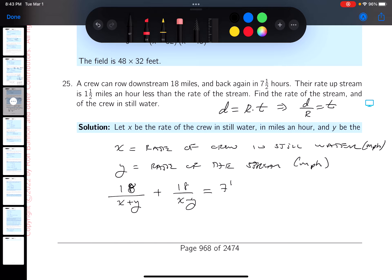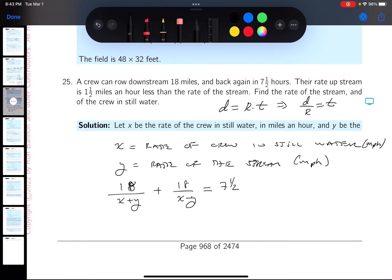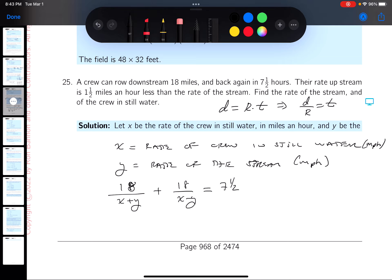By the way there's other things been said. It says a crew can row downstream 18 miles and back again in 7.5 hours, so it's with the current, against the current.